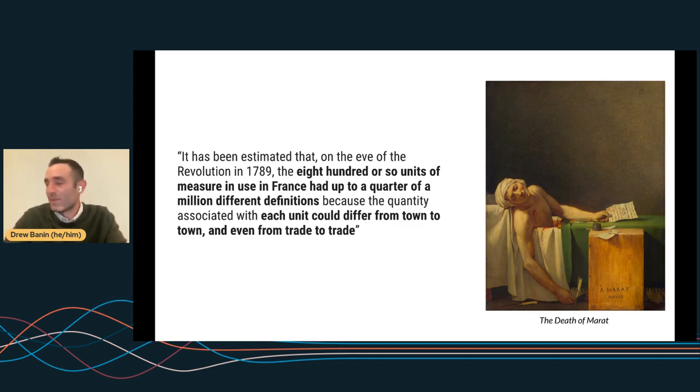So why the French Revolution and the metric system? Why are these two things happening at the same time? On the eve of the Revolution, the 800 or so units of measure in use in France had up to a quarter of a million different definitions because the quantity associated with each unit could differ from town to town and from trade to trade. Think about that. You're a French peasant. There's a quarter of a million different units you might need to interoperate with other people in your own country.